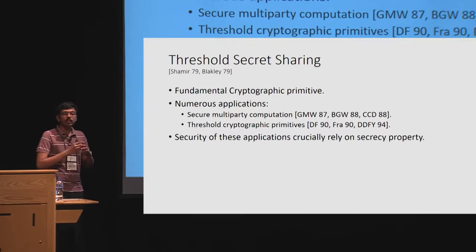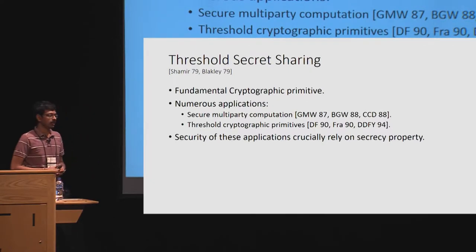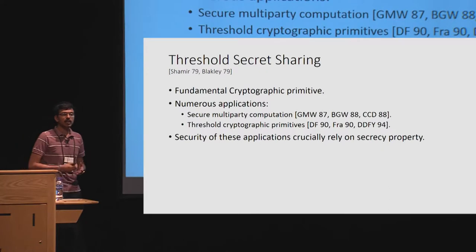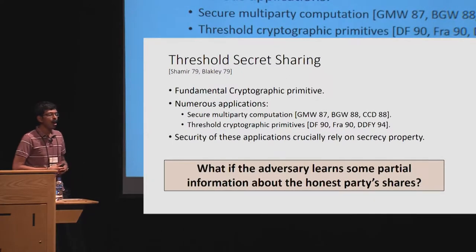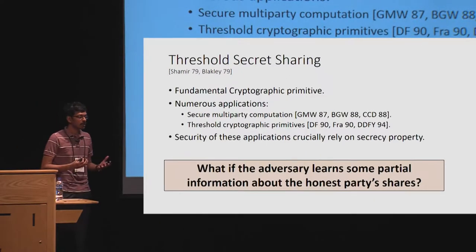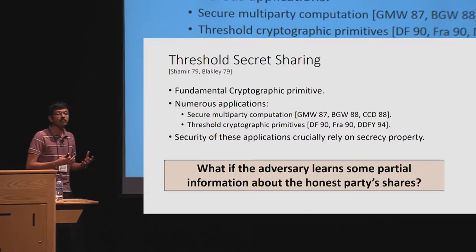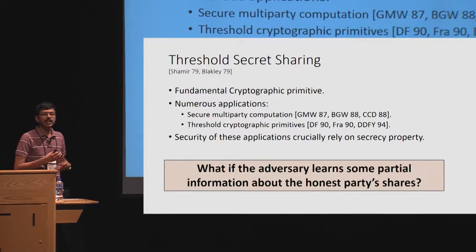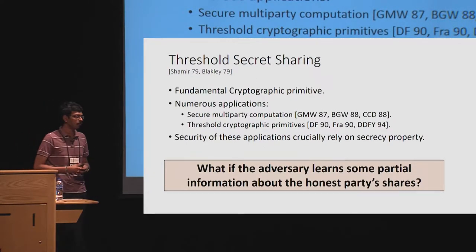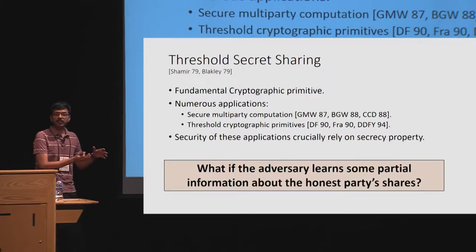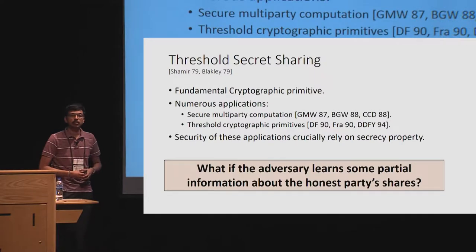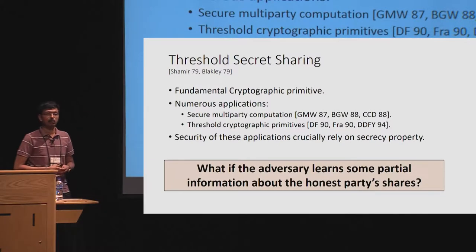Threshold secret sharing is a fundamental cryptographic primitive with numerous applications, including constructing secure multiparty computation protocols and threshold cryptographic primitives. The security of all these applications crucially relies on the secrecy property of the underlying secret sharing scheme. The question we'd like to address is: what if the adversary, in addition to corrupting t minus 1 parties, also learns some partial information about the honest parties' shares?